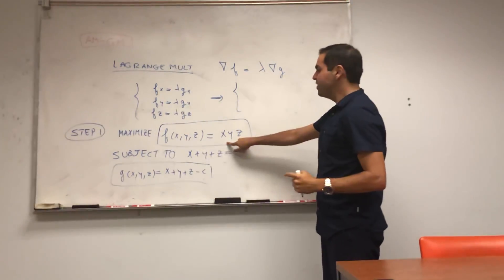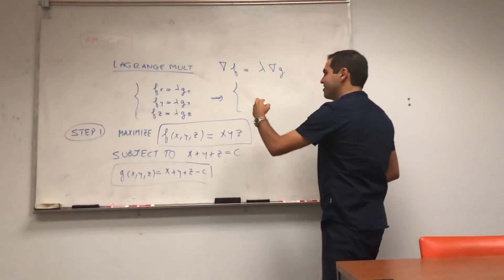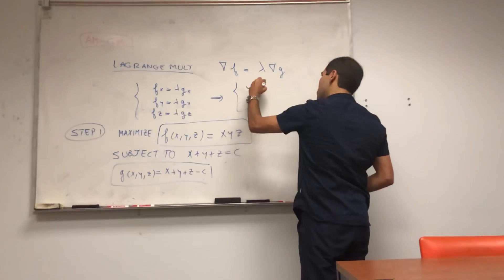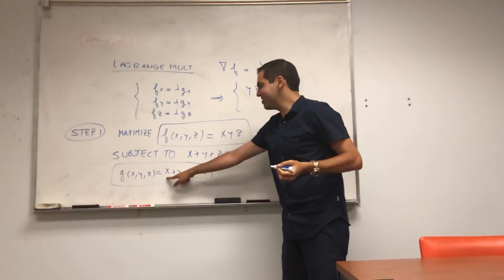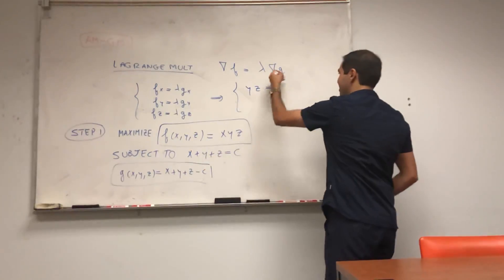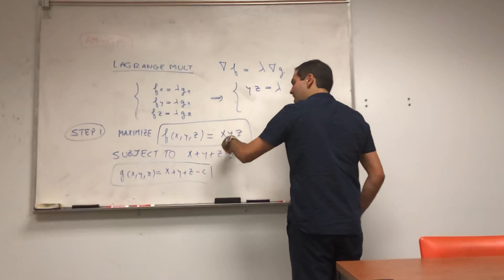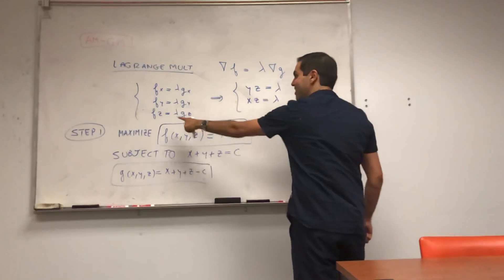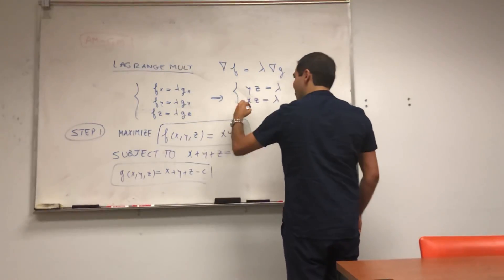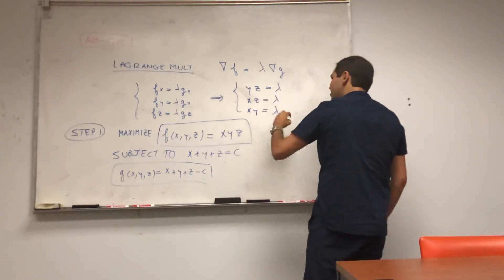So the derivative of xyz with respect to x just becomes this constant yz. The derivative of G with respect to x, just 1. So lambda times 1. And then similarly, the derivative of F with respect to y is xz, and that's lambda. And then the derivative of F with respect to z is xy, and it also equals to lambda.